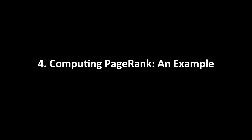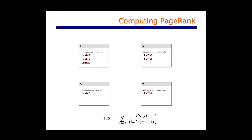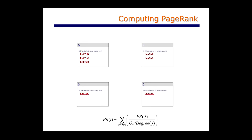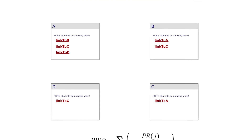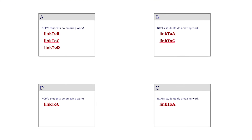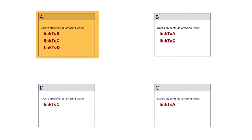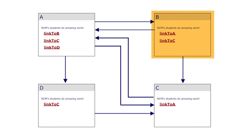Let's move beyond that intuitive definition of page rank and understand more precisely how page rank is computed by going through a really simple example. Imagine that the web consists of four pages: A, B, C, and D. Page A links to pages B, C, and D. Page B has a hyperlink to page A and page C.